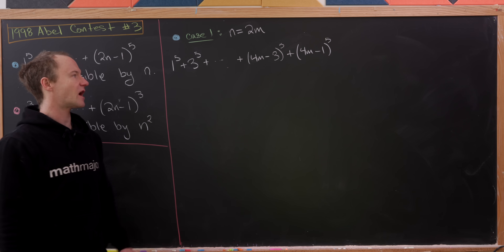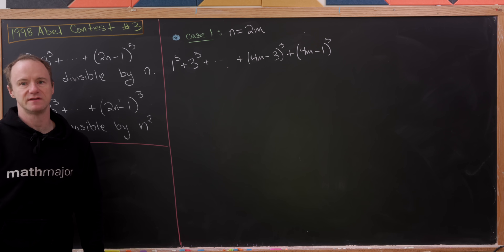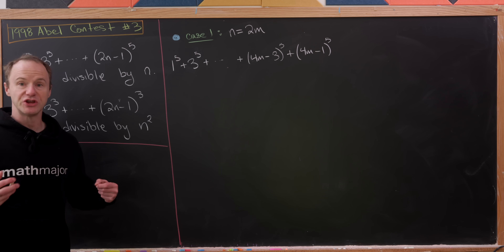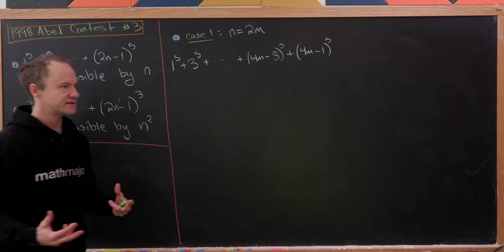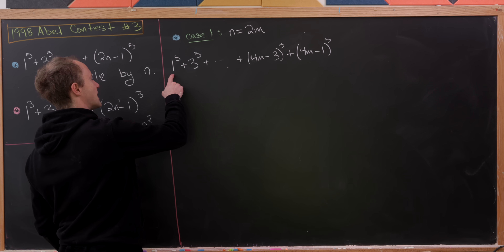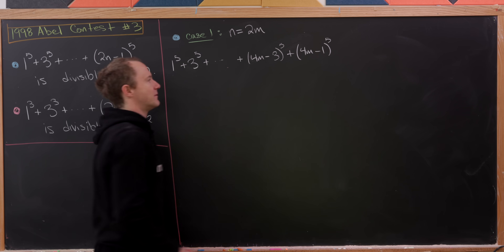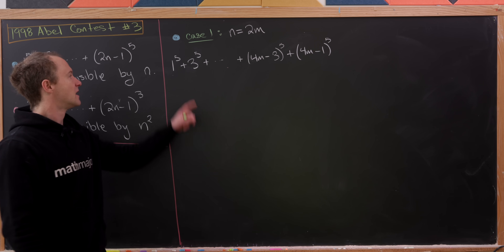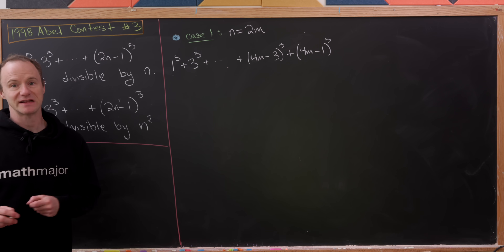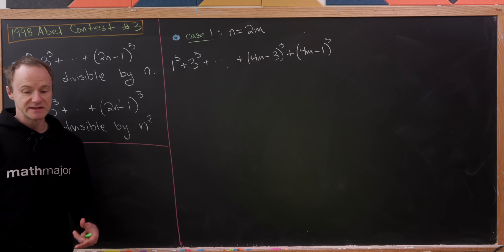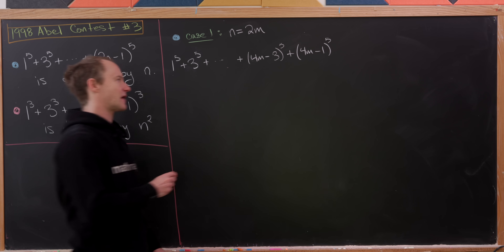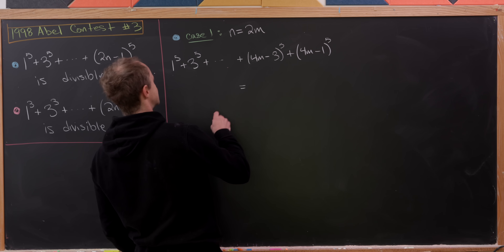The important thing here is that we have an even number of terms in this sum, and we're going to use that to pair them by folding in the middle. So we pair 1 to the fifth with 4m minus 1 to the fifth, 3 to the fifth with 4m minus 3 to the fifth, and so on. Since we've got an even number of terms, we get an exact pairing.